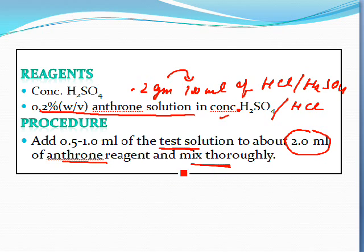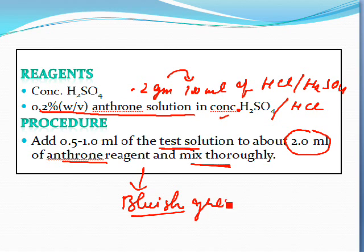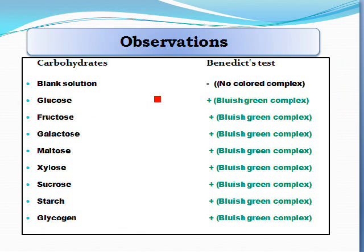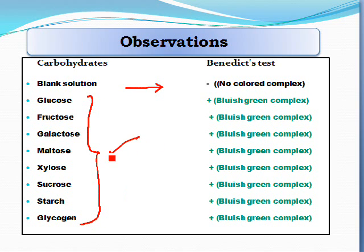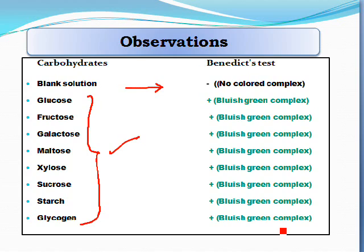Mix thoroughly. The mixture gives a bluish-green complex. In the observation table, the blank solution will not give the bluish-green color, but all carbohydrates give a bluish-green color complex with anthrone, because anthrone hydrolyzes the glycosidic bond to yield monosaccharides, which in the presence of acid are dehydrated to form furfural. This furfural then reacts with anthrone to give the colored complex.